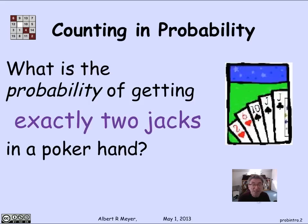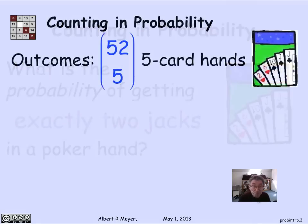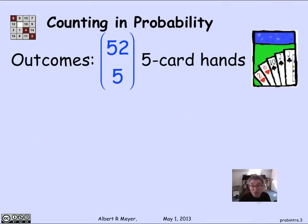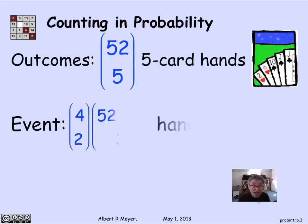I'd like to ask: if I deal a hand of five cards in poker, what's the probability of getting exactly two jacks? There are 13 ranks and there are four kinds of jacks — spades, hearts, diamonds, clubs. What's the probability that among my five cards I'm going to get two of them? Well, that's really a counting problem. How many possible five-card hands are there? We can think of these as outcomes of a random experiment of just picking five cards, and there are 52 choose 5 five-card hands in a 52-card deck.